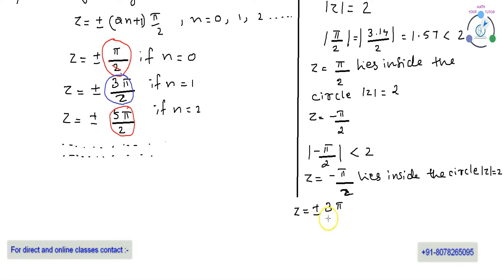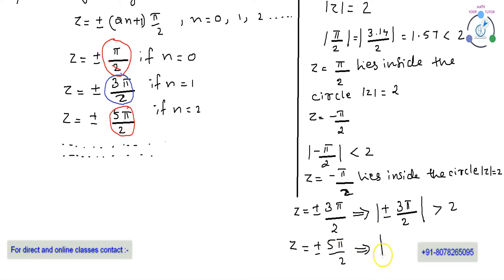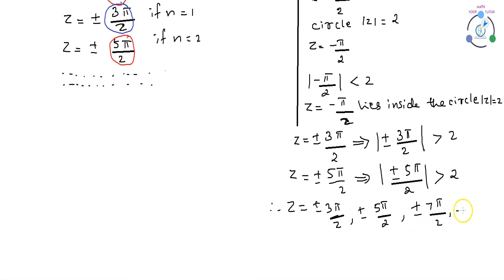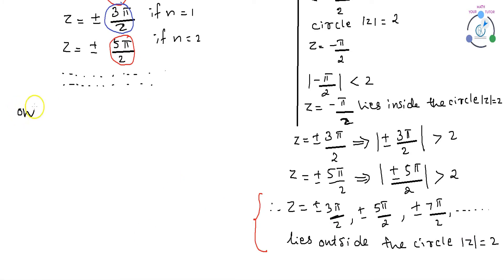Putting z = ±3π/2 in |z| = 2, we get |±3π/2| which is greater than 2. Putting z = ±5π/2, we get |±5π/2| which is also greater than 2. Therefore, z = ±3π/2, ±5π/2, ±7π/2 and so on are all outside the circle. Only z = π/2 and z = -π/2 lie inside the circle.